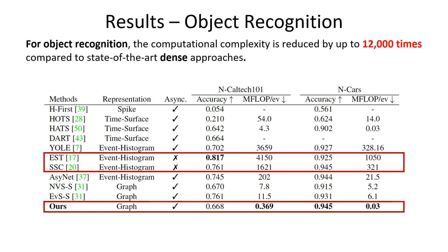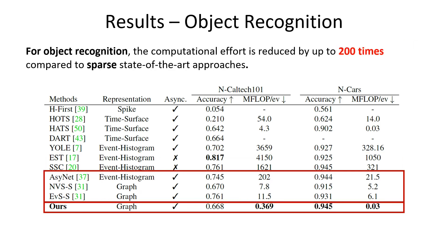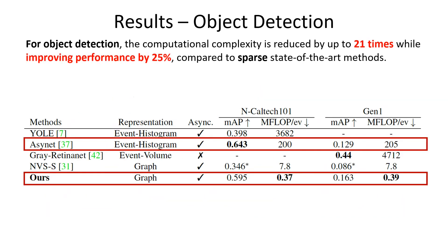Driven by our sparse implementation for object recognition, the computational complexity is reduced by up to 12,000 times compared to state-of-the-art dense approaches. For object detection, the computational complexity is reduced by up to 21 times while improving performance by 25% compared to sparse state-of-the-art methods. This result not only demonstrates the efficiency of our algorithm, but also the intrinsic advantage of maintaining the event's high temporal resolution throughout the prediction.